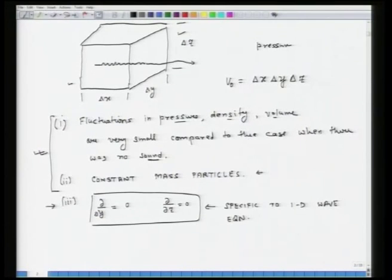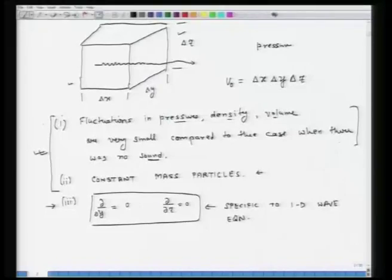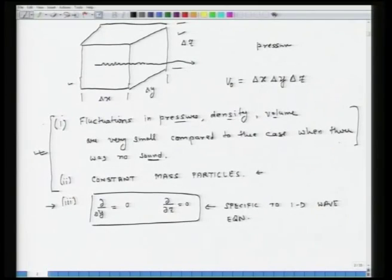We have said that our first assumption is that fluctuations in pressure, density and volume are extremely small compared to the case when there was no sound to begin with. Now we will try to understand the actual basis underlying this assumption. Earlier in one of our lectures, we shared some information about different pressure levels associated with different sound events. So let us have a relook at some of those numbers.